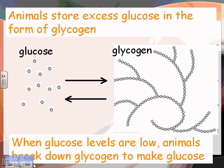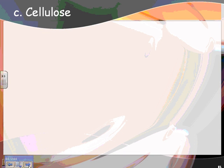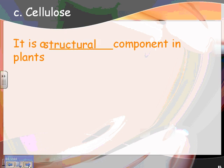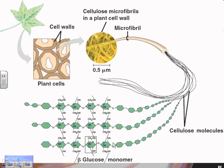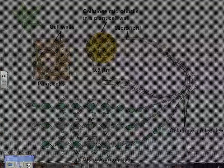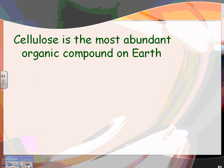Cellulose is the structural carbohydrate found in plants — it's a structural component of plant cell walls. Here's what it looks like: glucose molecules bonded together in a chain, then chains bonded to one another, forming a strong fiber. Under a microscope it looks like a fiber. If you look at a cotton ball, it is something like ninety percent cellulose.